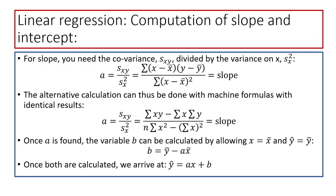Once a is found, the variable b can be calculated by allowing x equals x-bar and y-hat equals y-bar. Remember, y-hat is our estimator, and we're going to use y-bar in its place on the regression line. Once both are calculated, we get the full regression equation.